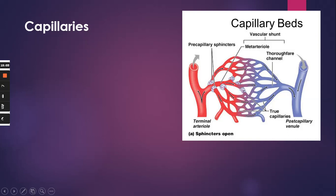Looking at this picture, we have our arterioles leading into a capillary bed. We don't distinguish between an arterial or venous capillary bed — it's just a capillary bed, and it's the go-between between arterioles and venules.